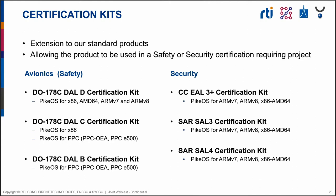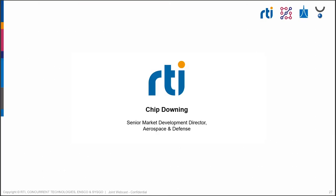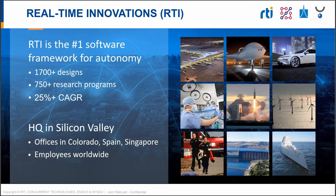We now move to the next level — RTI. I'm Chip Downing with Real-Time Innovations. I also chair the FACE Business Working Group Outreach Team and have been involved with these standards for over 10 years. Real-Time Innovations is the number one software company for autonomy, with over 1,700 design wins, 750 research programs, and growing at 25% plus. We are headquartered in Silicon Valley with offices in Colorado, Spain, and Singapore, and employees worldwide.